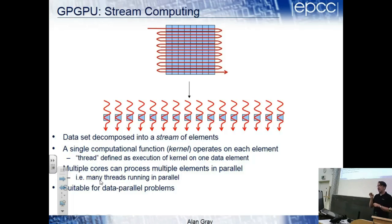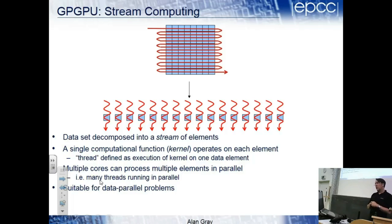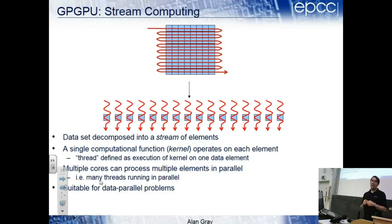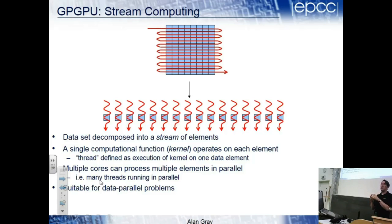You write a function that updates one cell and this becomes one GPU thread. Then you launch vast numbers of threads at once - thousands, millions of threads. The GPU is designed to cope with a vastly higher number of threads than physical CPU cores. Someone asked about this - when discussing load balancing with a picture of the Mona Lisa, I had said we need more tasks than threads.